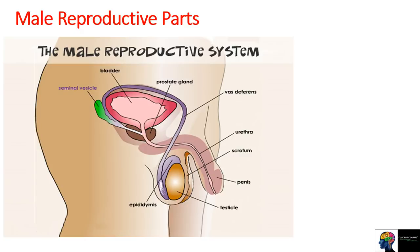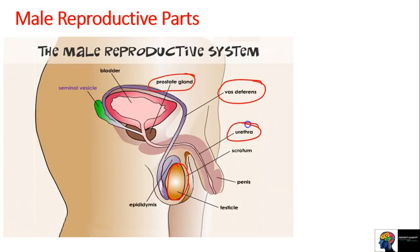Now let's look at the male reproductive parts in depth - how male reproduction works. The most important primary reproductive part in males is the testis. As I told you in the previous slide, there are also accessory reproductive parts. These are: prostate gland, vas deferens, urethra, and seminal vesicle - all of these help the sperms in meeting the egg.